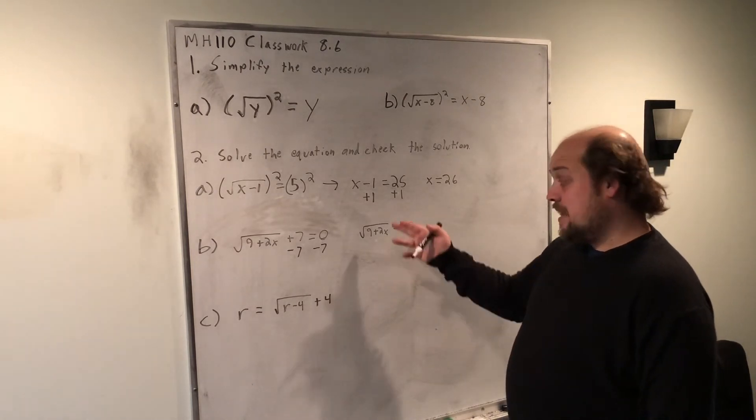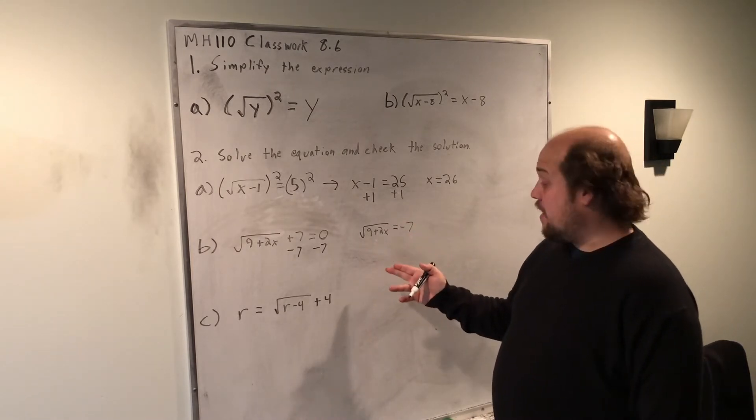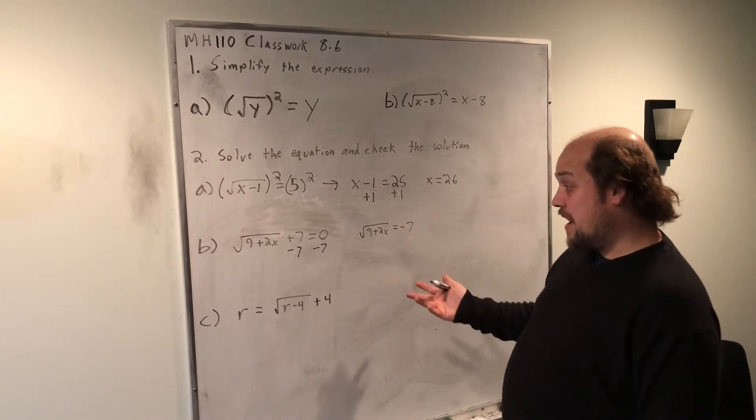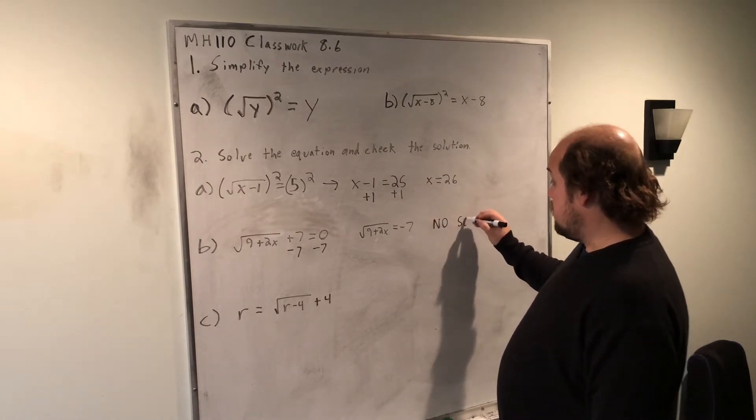Can't happen. If you have a root equal to a positive answer, you can square both sides and go from there. If you have the root equal to a negative answer, you need to recognize this is not possible, and write it as no solution.